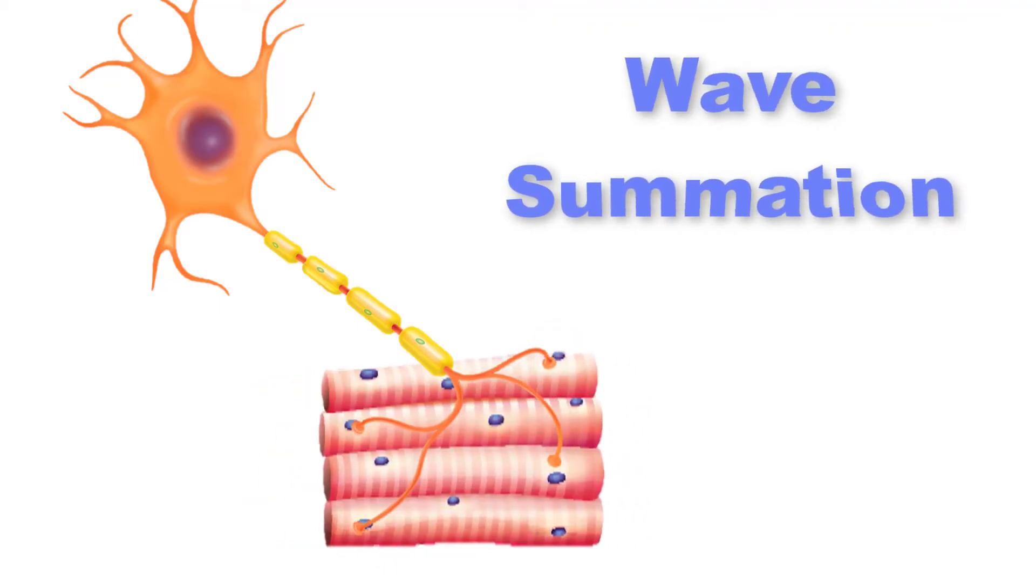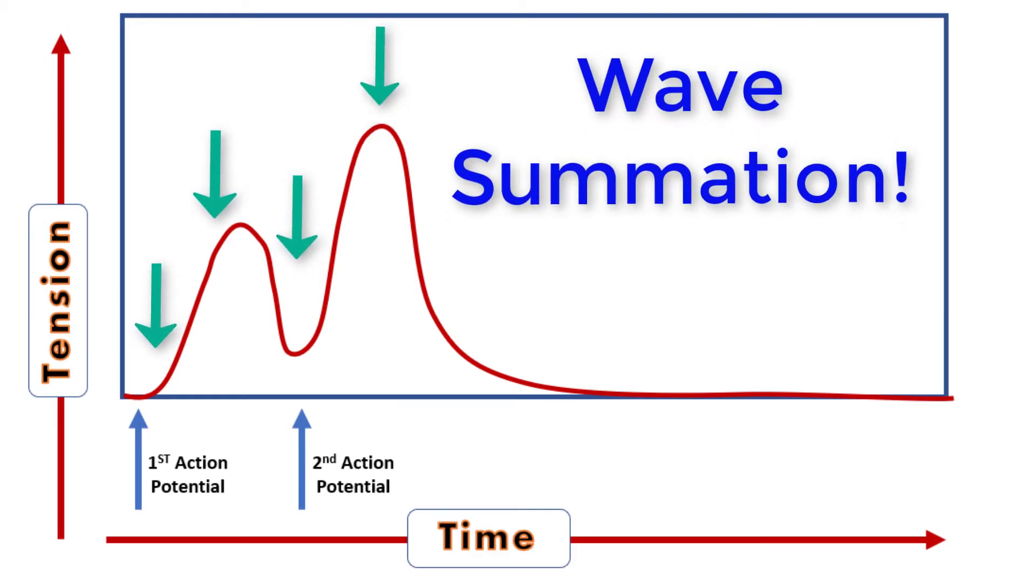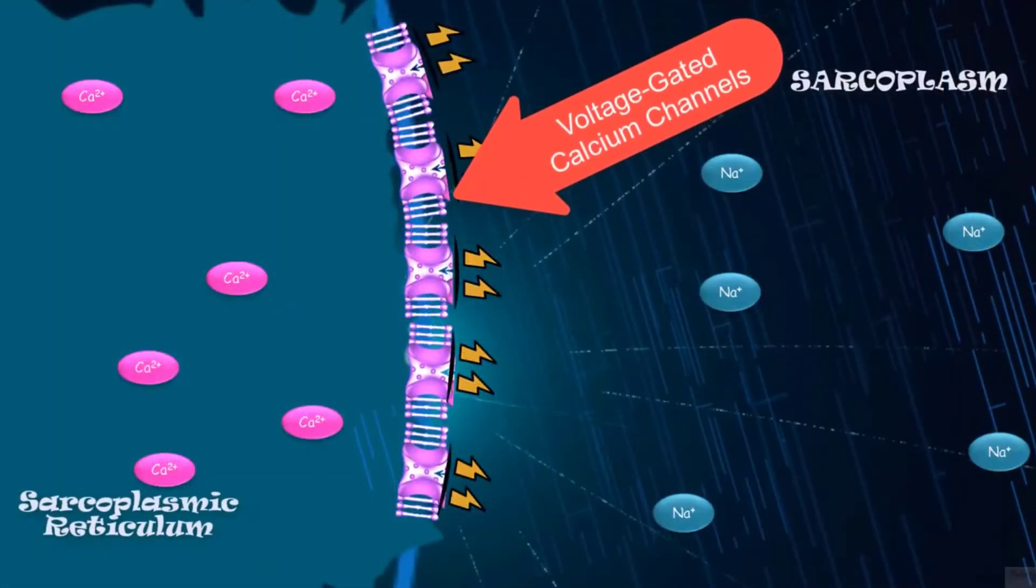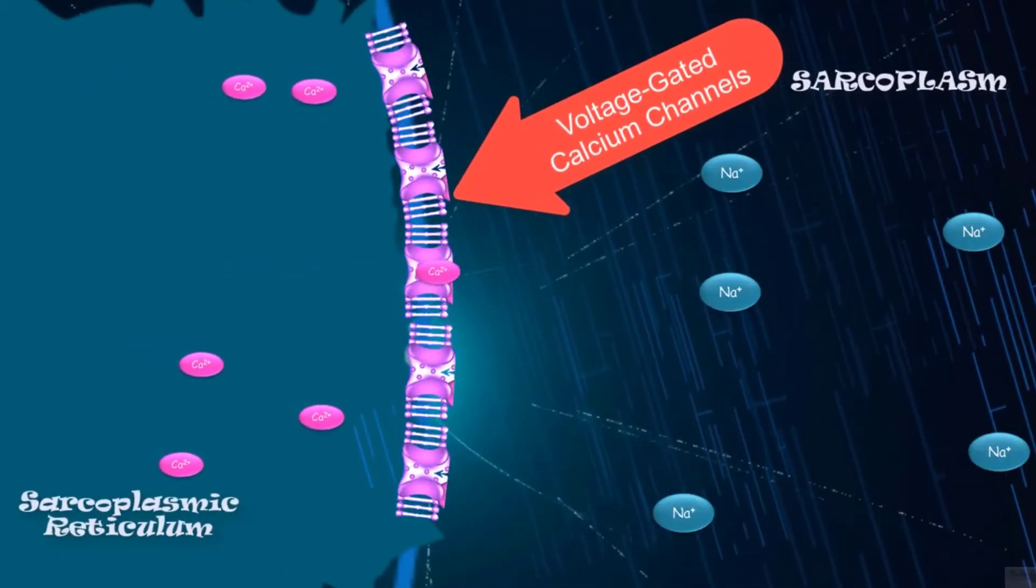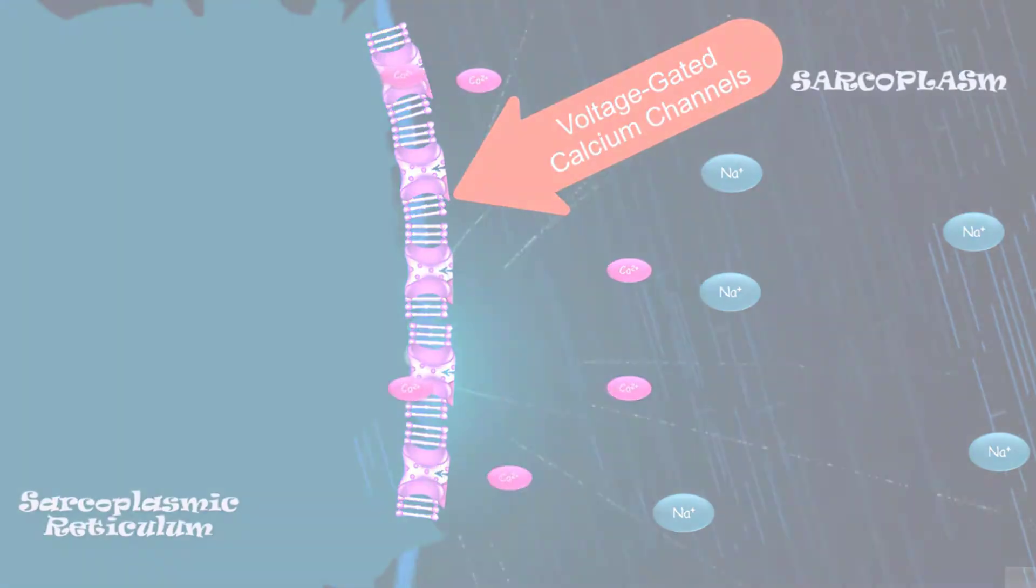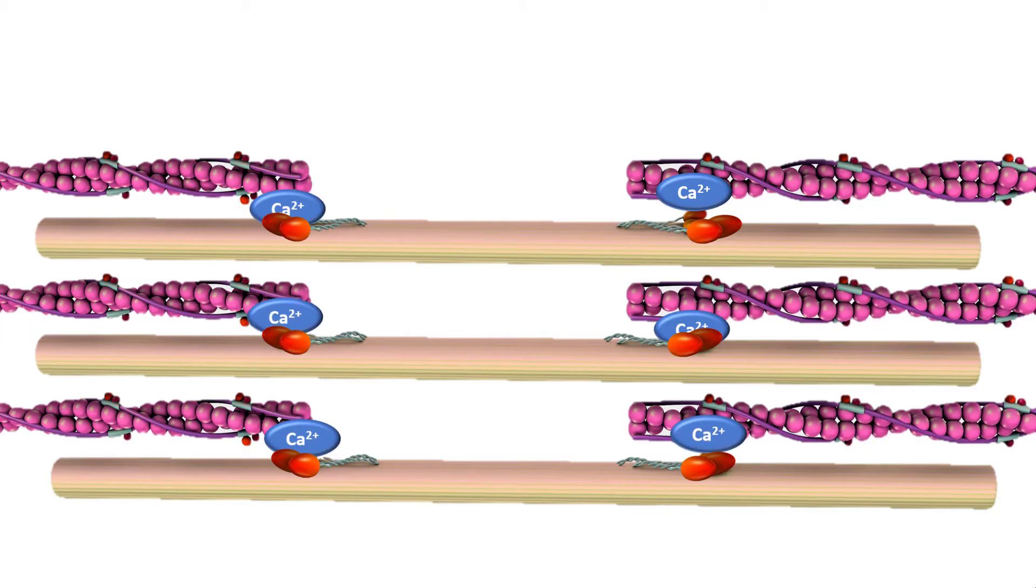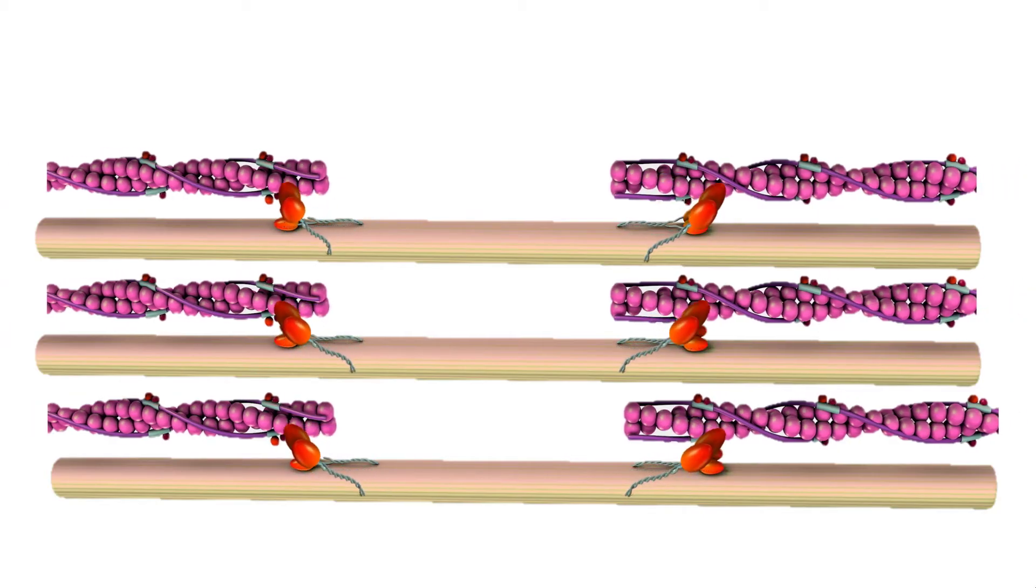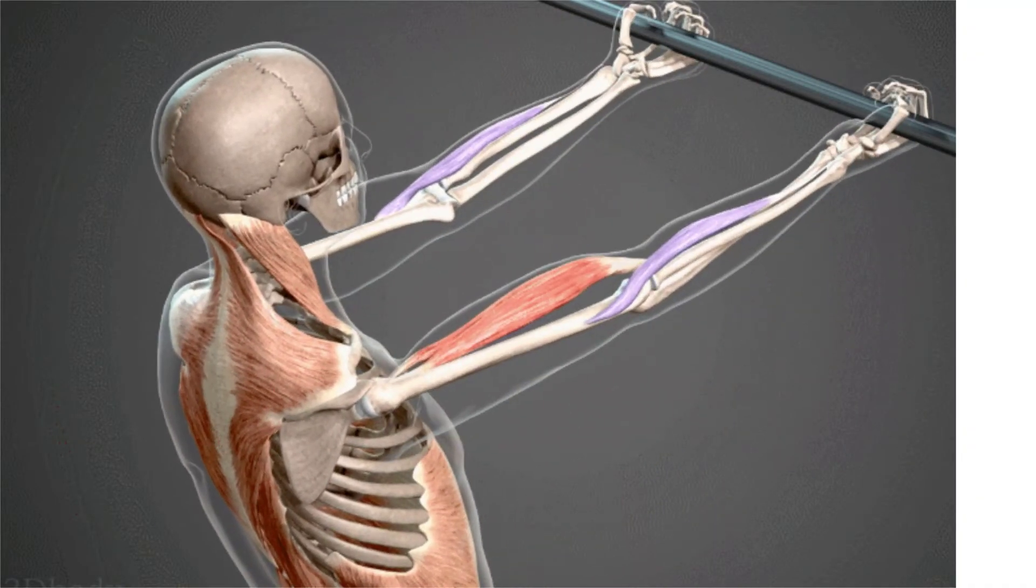Wave summation occurs because the excitation contraction coupling effects of successive motor neuron signaling is summed or added together. At the molecular level, summation occurs because the second stimulus triggers the release of more calcium ions, which become available to activate additional sarcomeres while the muscle is still contracting from the first stimulus. Summation results in greater contraction of the motor unit.